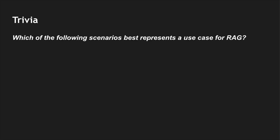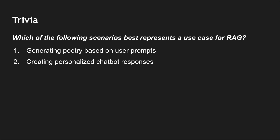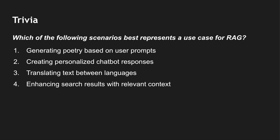Coming to the trivia question — which of the following scenarios best represents a use case for RAG? I'll give you four options: generating poetry based on user prompts, creating personalized chatbot responses, translating text between languages, or enhancing search results with relevant context. Which of these do you think is the best use case for the RAG architecture? I created this trivia using Copilot which is based on GPT-3. Let me know the answer in the comment section below and we can interact more there.